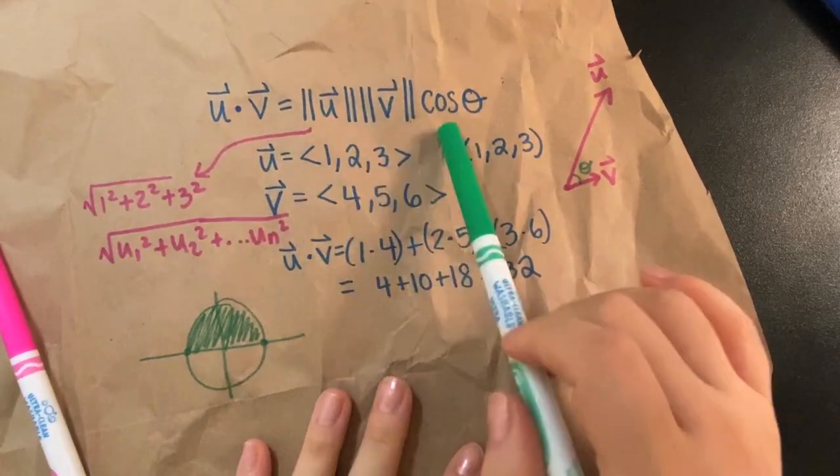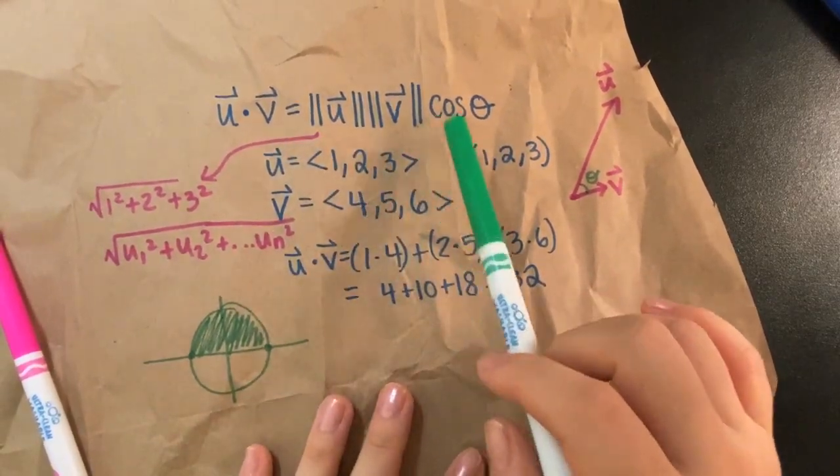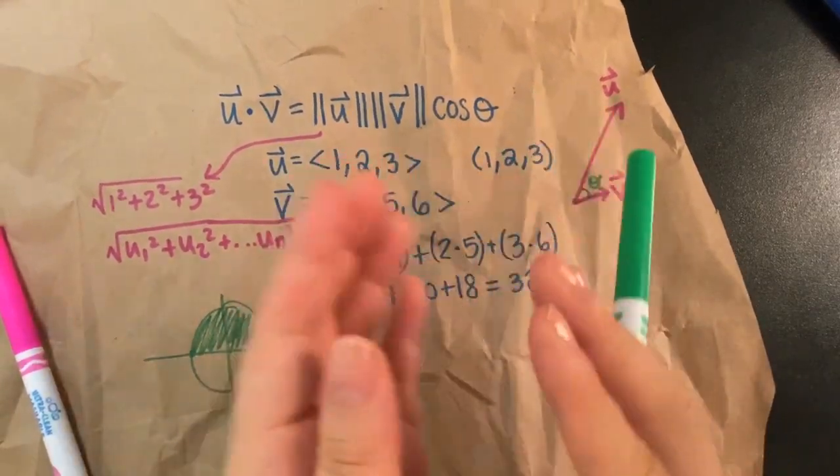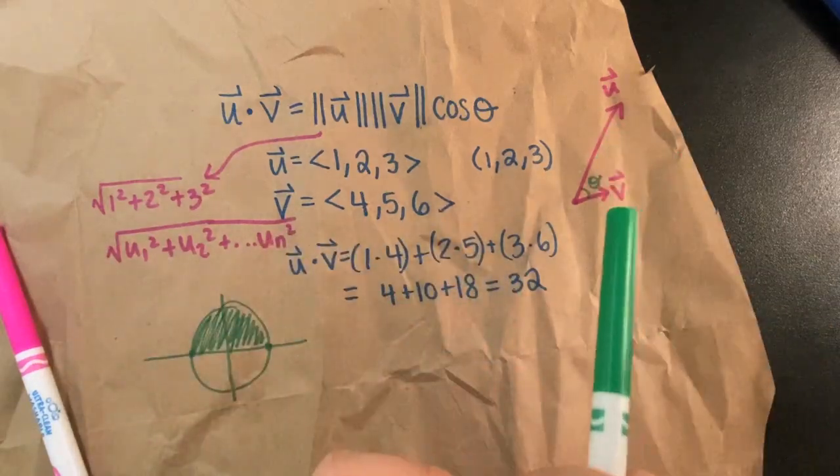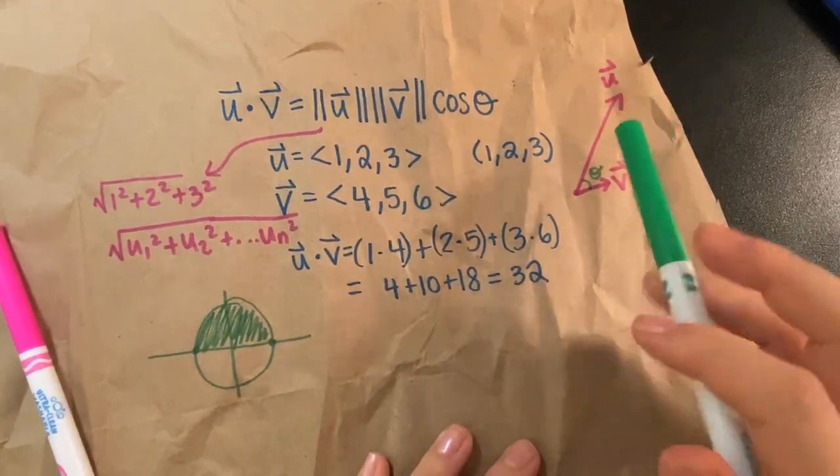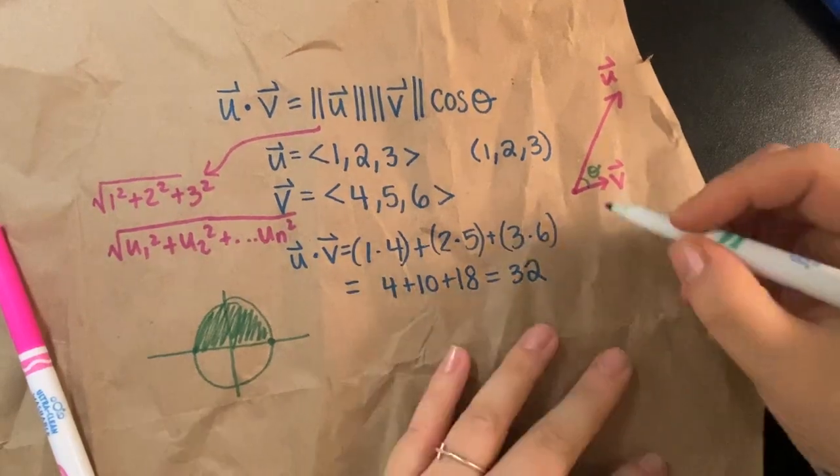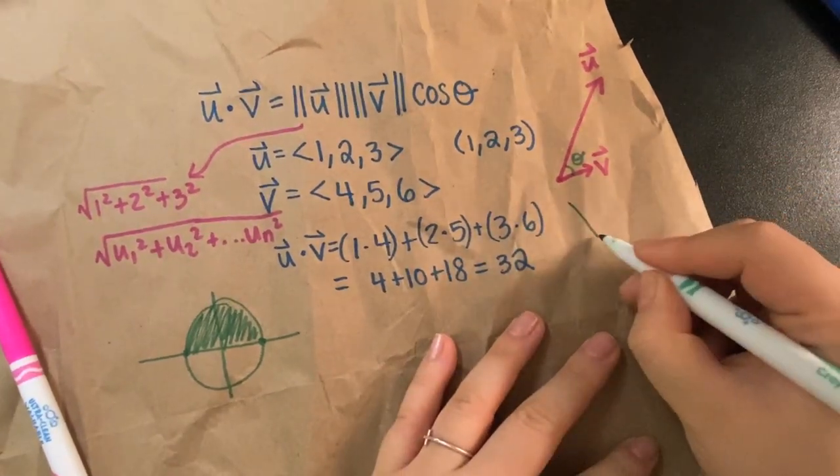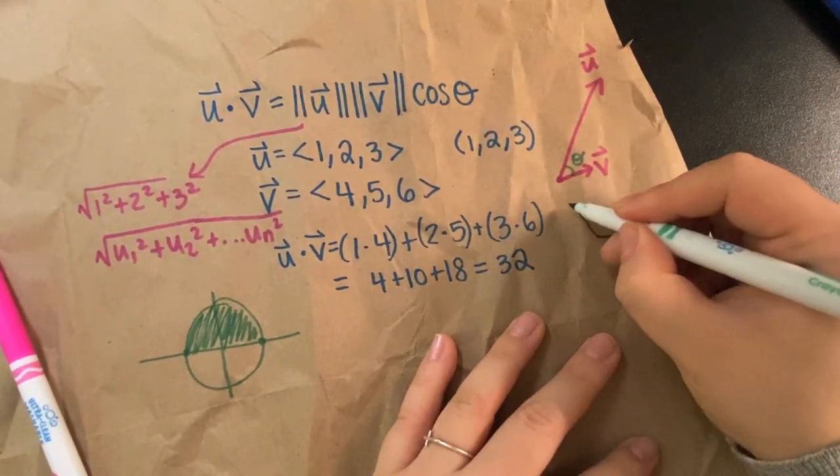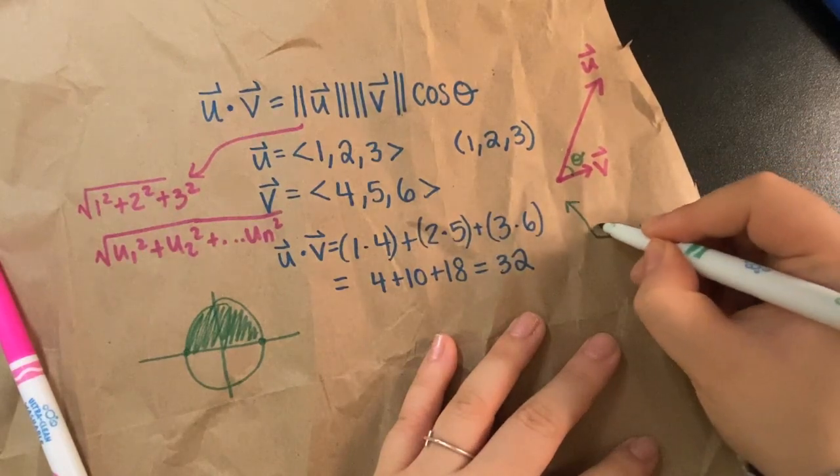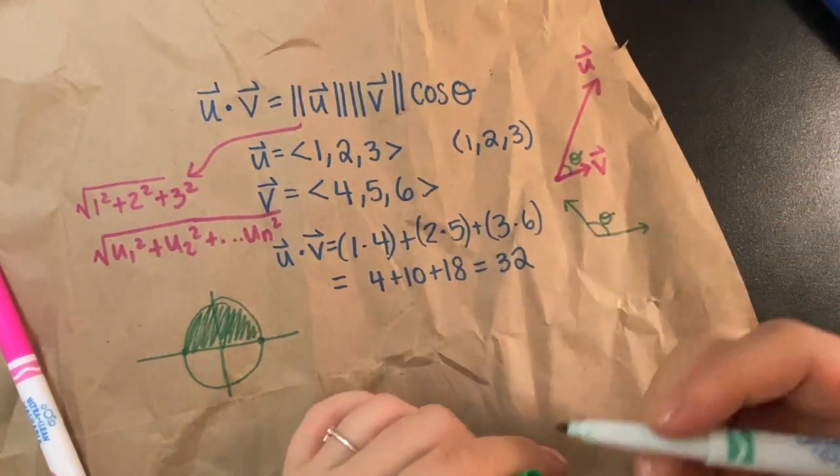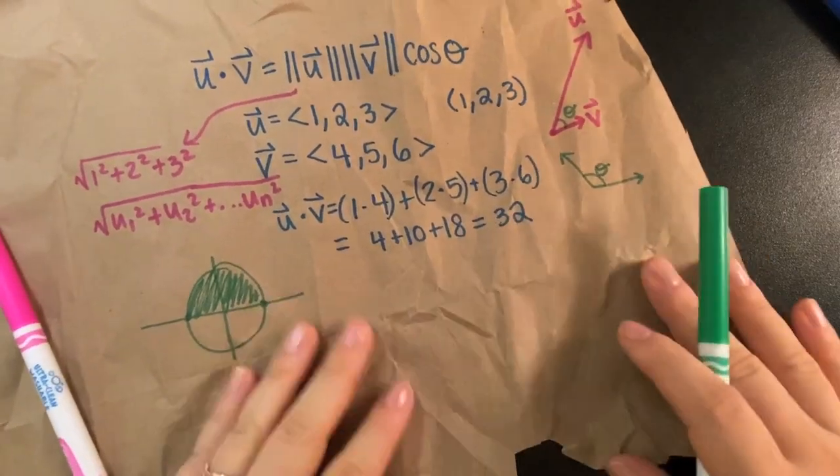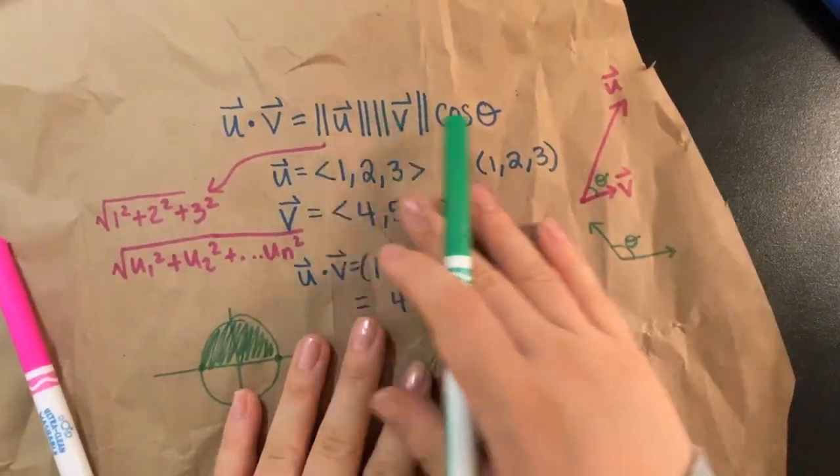But just the most straightforward way of applying this formula is to limit theta from 0 to 180, so the cutesy interior angle. So again, if one vector's like this and one vector's like this, the angle between them is going to be this one. That's going to be theta.